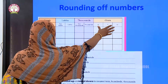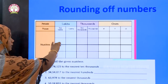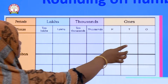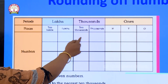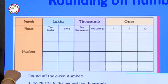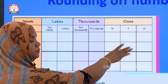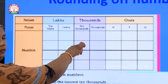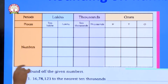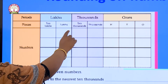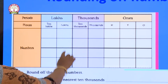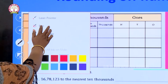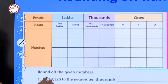The Indian system has the ones period, thousands period, and lakhs period. We are learning the seven-digit number. In the ones period we have three places: ones, tens, and hundreds. In the thousands period we have two places: thousand and ten thousand. In the lakhs period we have two places: lakhs and ten lakhs.